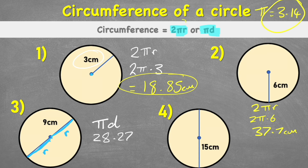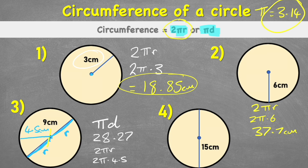Let's verify using the radius formula. If the diameter is nine centimeters, then the radius is 4.5 centimeters. Doing 2πr — two times pi times 4.5 — gives exactly the same answer: 28.27. This shows that radius is exactly half of diameter, so either formula works as long as you use the correct measurement.